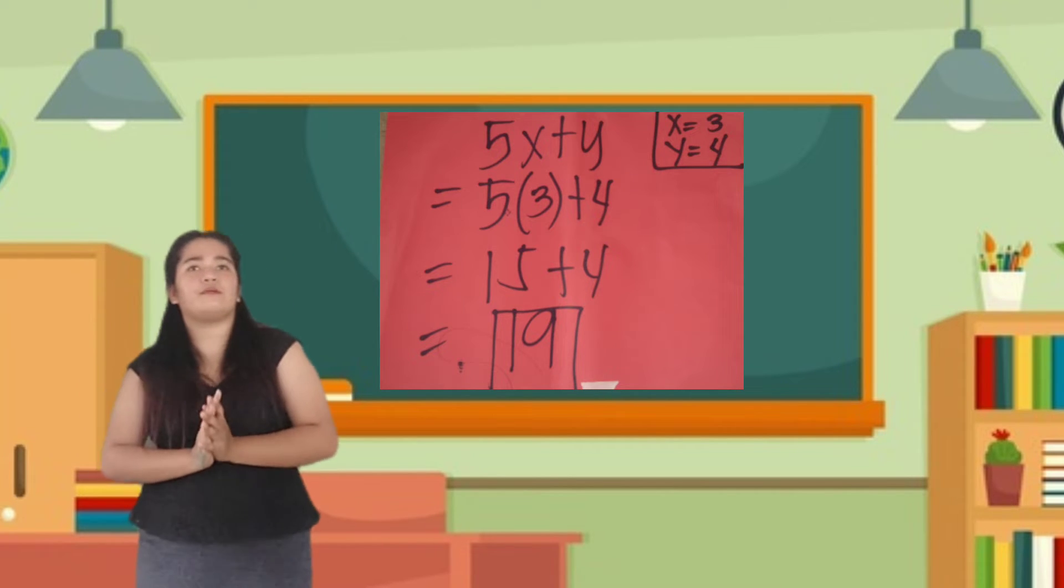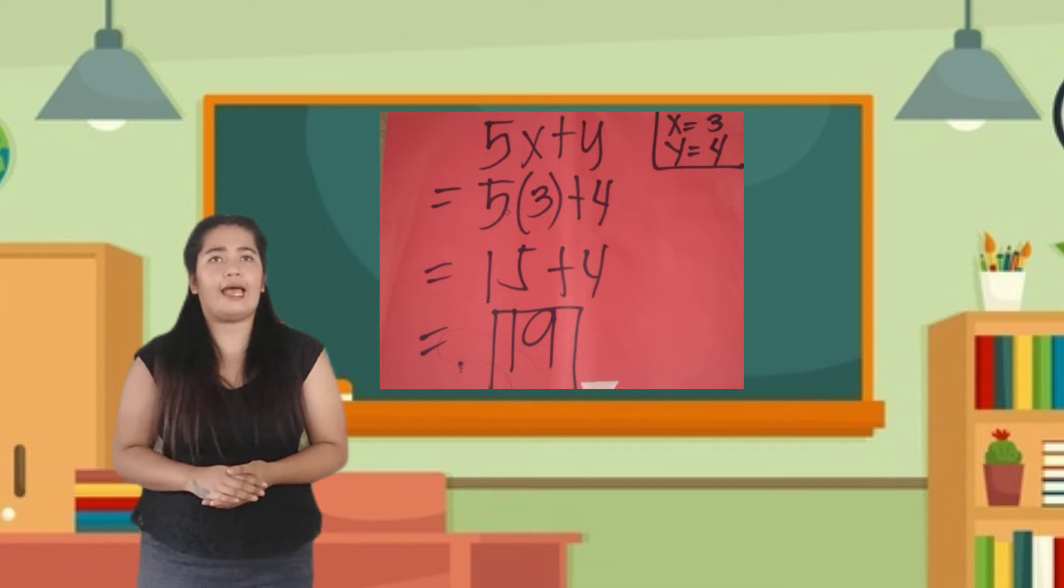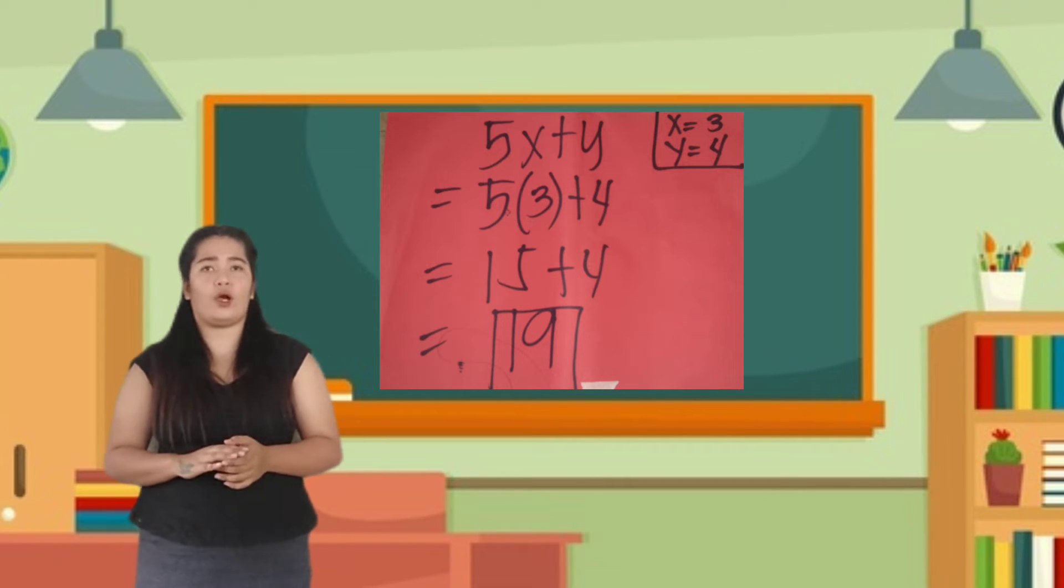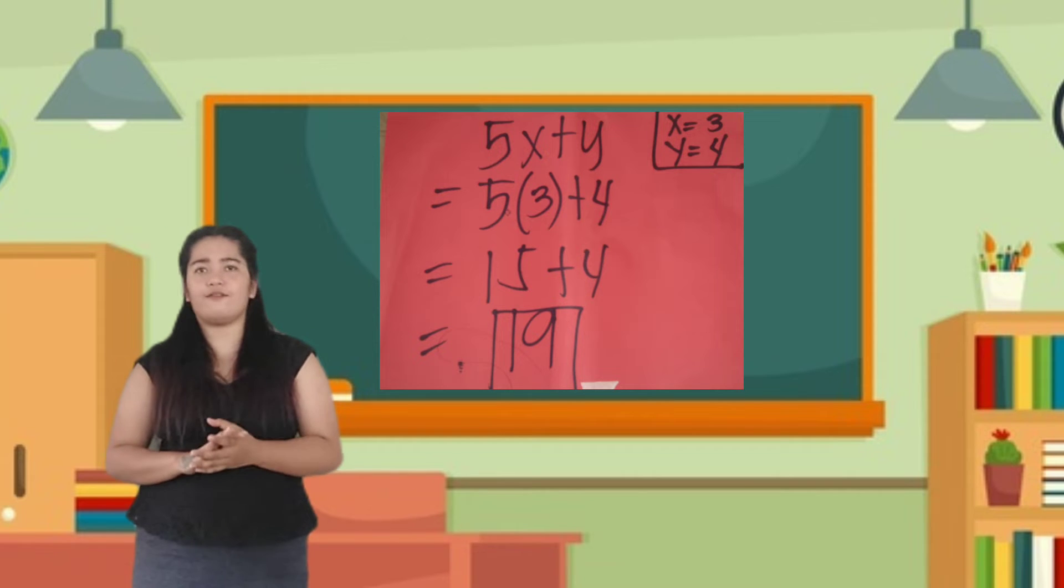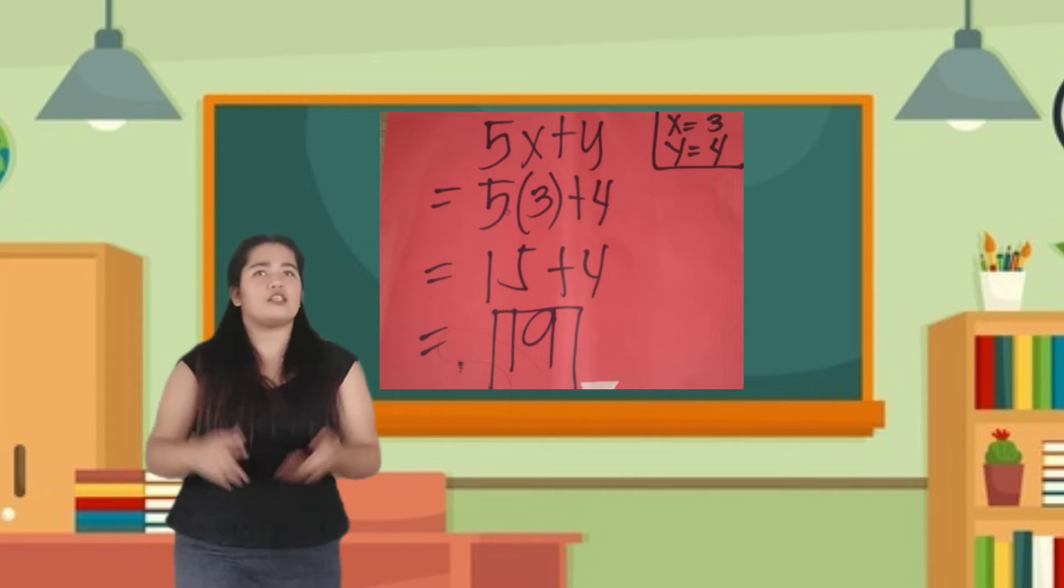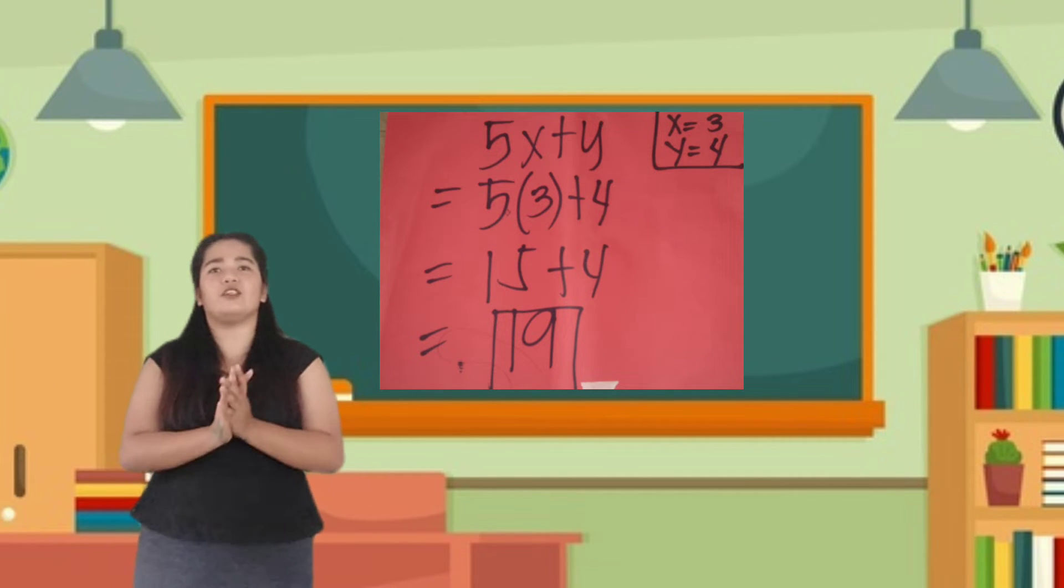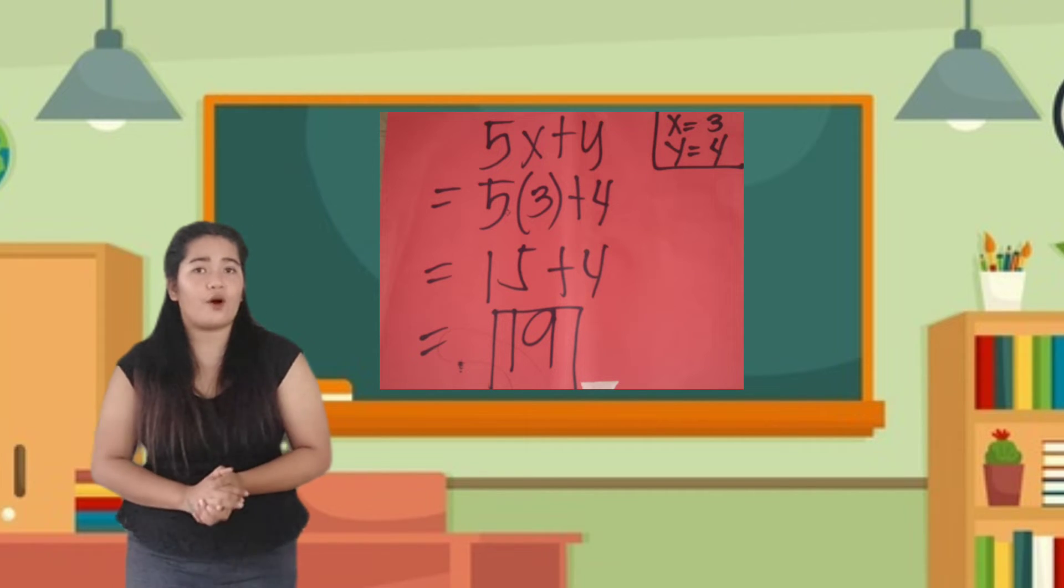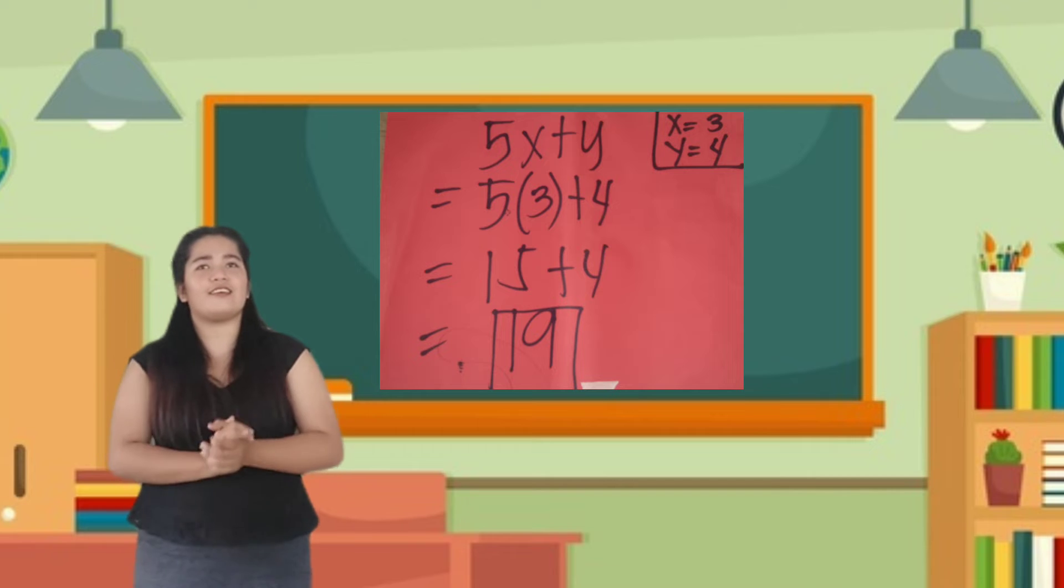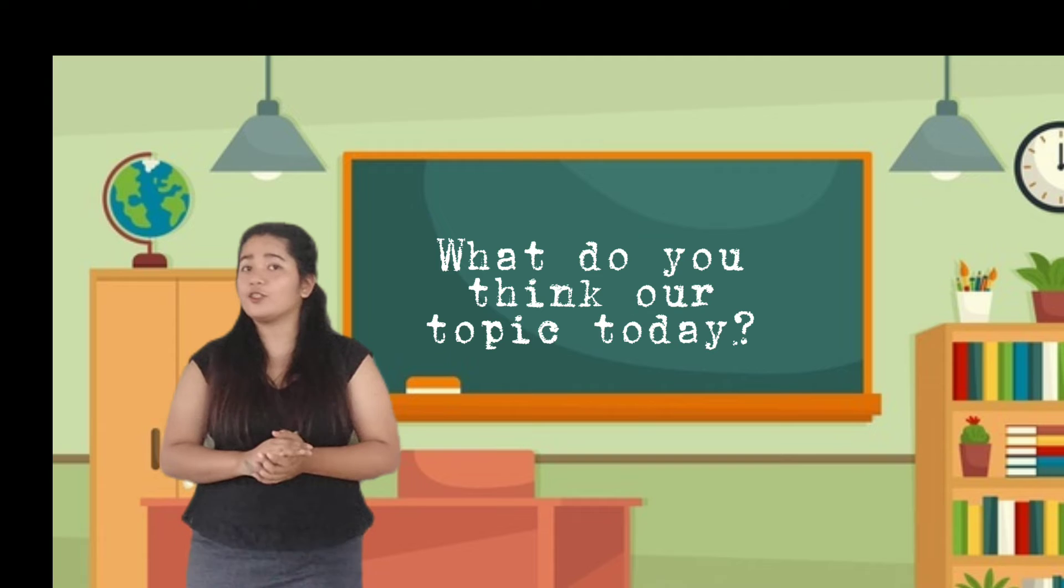Okay. Number four. 5X plus Y where X is equal to 3 and Y is equal to 4. Substitute X into 3 and Y into 4. So, 5 times 3 plus 4. Very easy class. So, 5 times 3 is equal to? Yes. Very good. 15 plus 4. So, 15 plus 4 is equal to? Yes. It's 19. So, class, what do you think our topic today? Do you have any ideas?